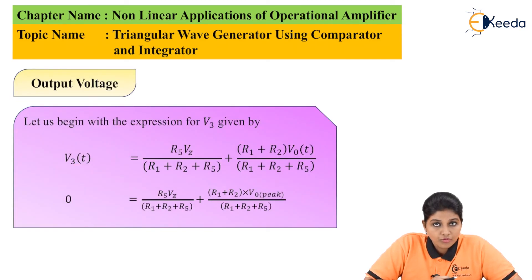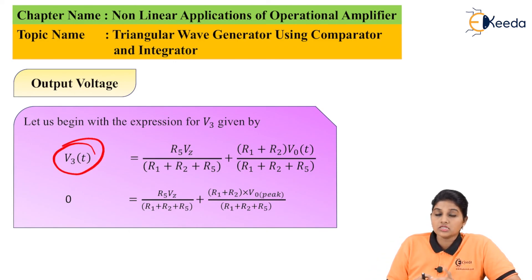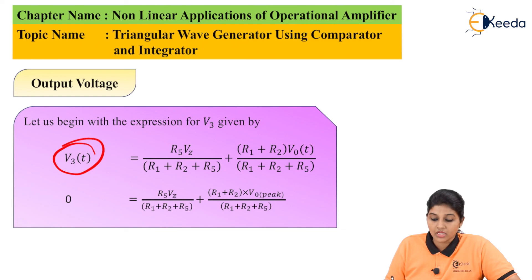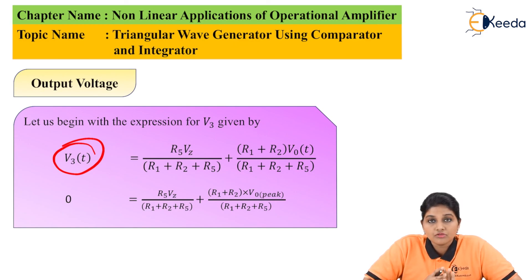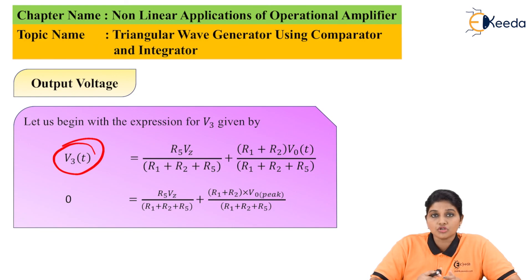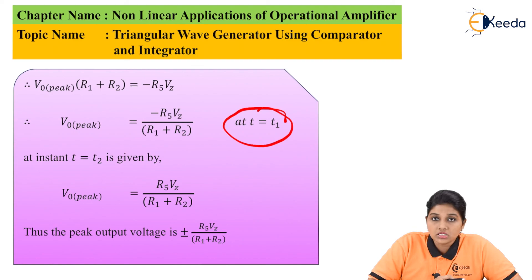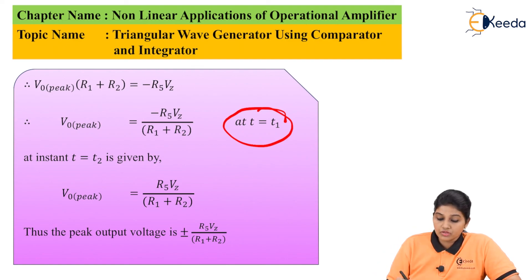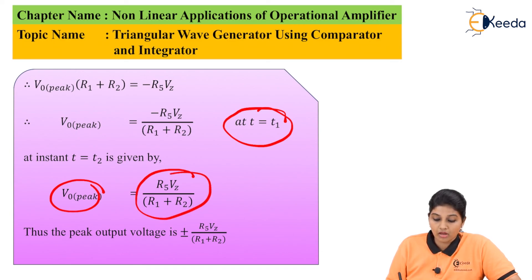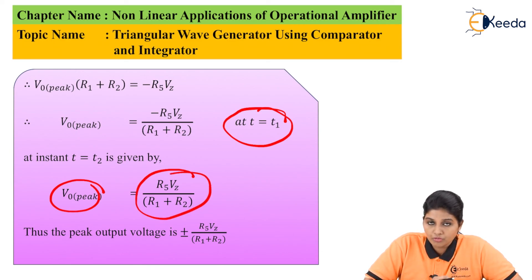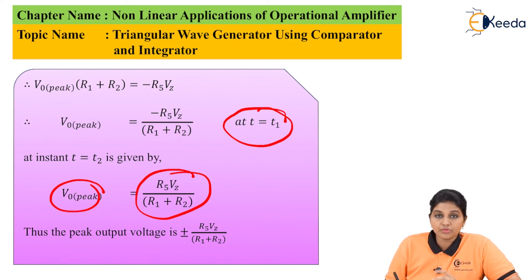Moving towards the output voltage, the voltage at terminal V3 is given by the superposition theorem as: V3 = (R5 × Vz) / (R1 + R2 + R5) + (R1 × R2 × Vo(t)) / (R1 + R2 + R5). Now if we consider V3 at T = 0 and substitute this value in the equation, we obtain the output voltage V0_peak = −(R5 × Vz) / (R1 + R2) at T = T1. At T = T2, we obtain V0_peak = +(R5 × Vz) / (R1 + R2). So these are the peak values of the output voltage, giving a peak-to-peak value of ±(R5 × Vz) / (R1 + R2).